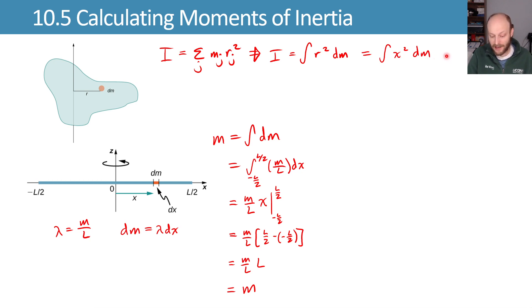Now we have our dm from before, which is going to be M over L dx. The M over L is constant, so it can come out front. And we're left with the integral of x squared dx.